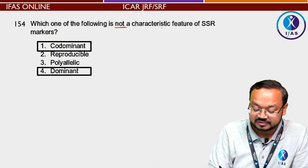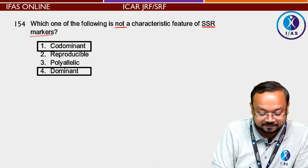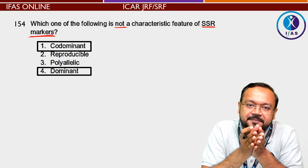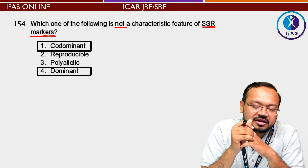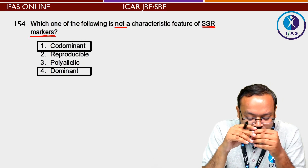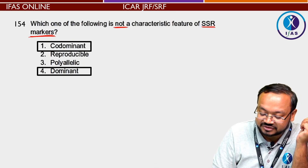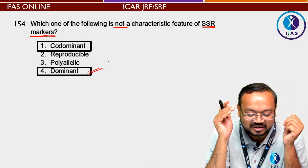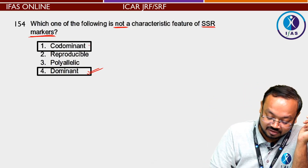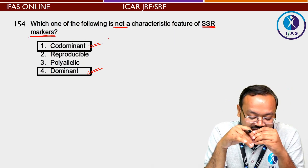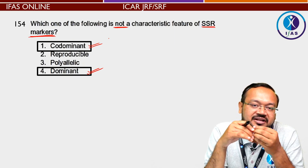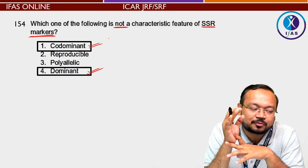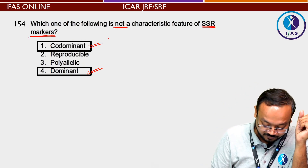Next question: Which one of the following is NOT a characteristic feature of SSR marker? SSR यानी Simple Sequence Repeats — ये बहुत छोटे repeats होते हैं, approximately 2, 3, 5 या 7 base pair के repeats। Answer दिया है: dominant। SSR marker dominant type का नहीं है — यह actually codominant marker का example है। ध्यान रखना कि कई सारे questions में errors भी आ जाते हैं, तो जब आपको लगे कि question में error है, ऐसे questions को attempt न करें।